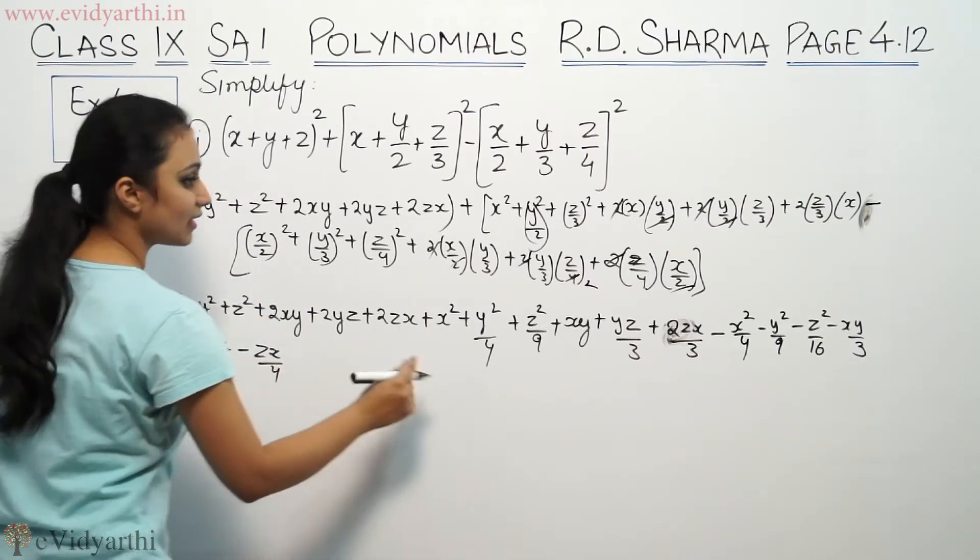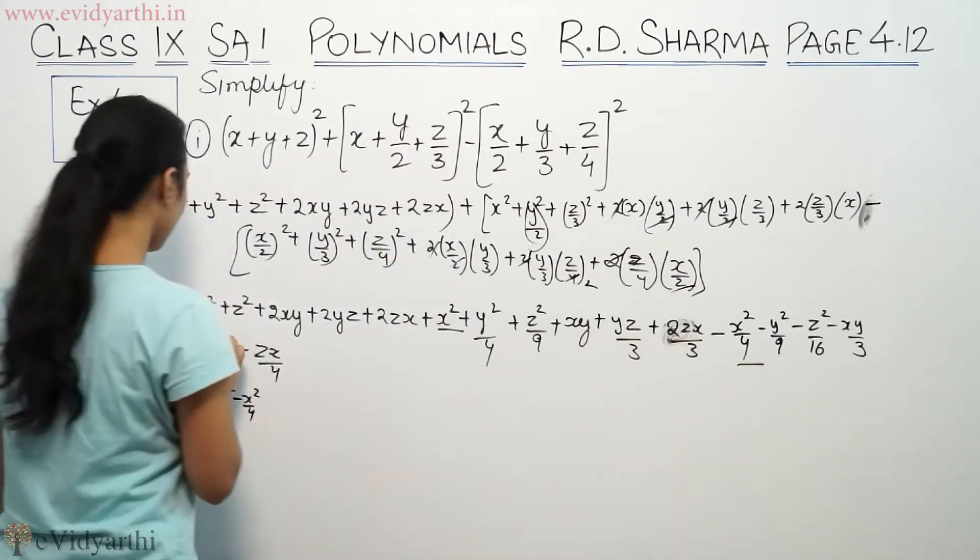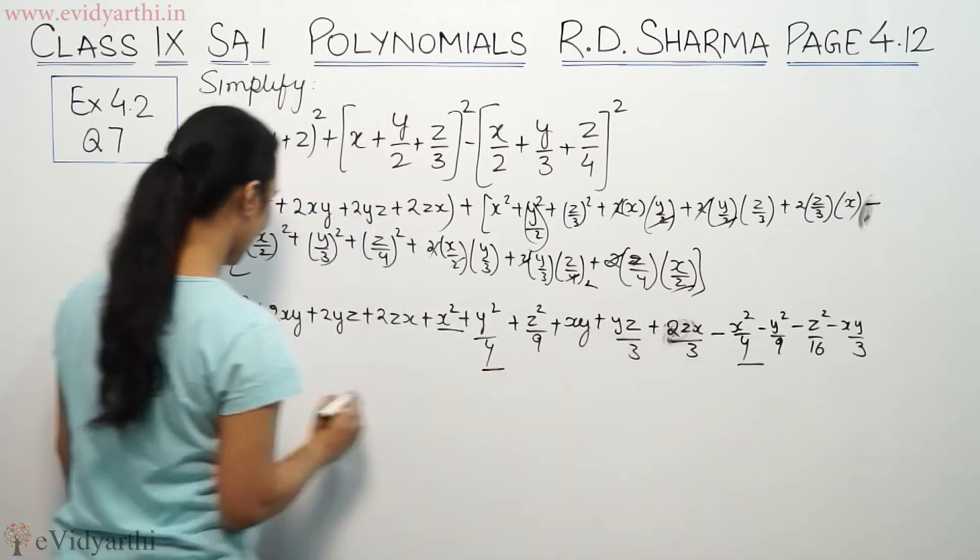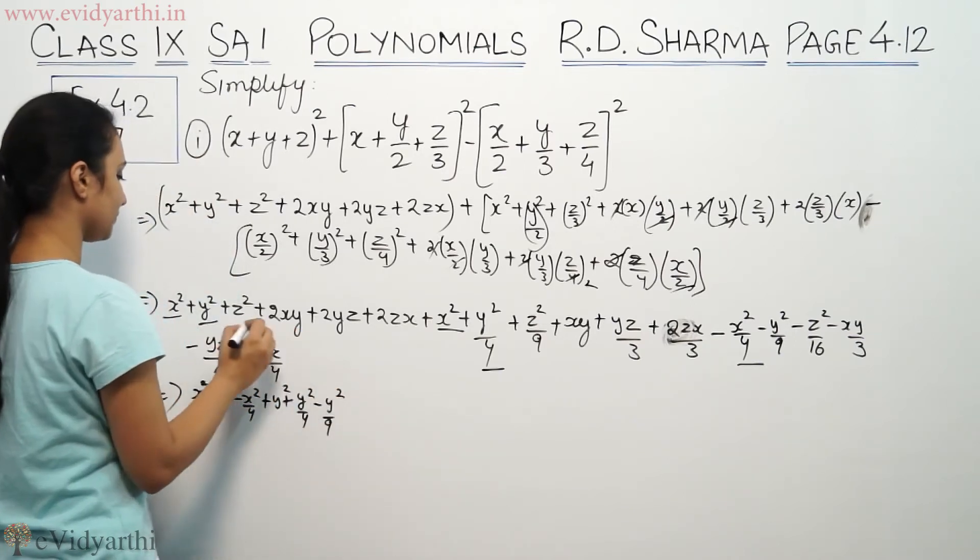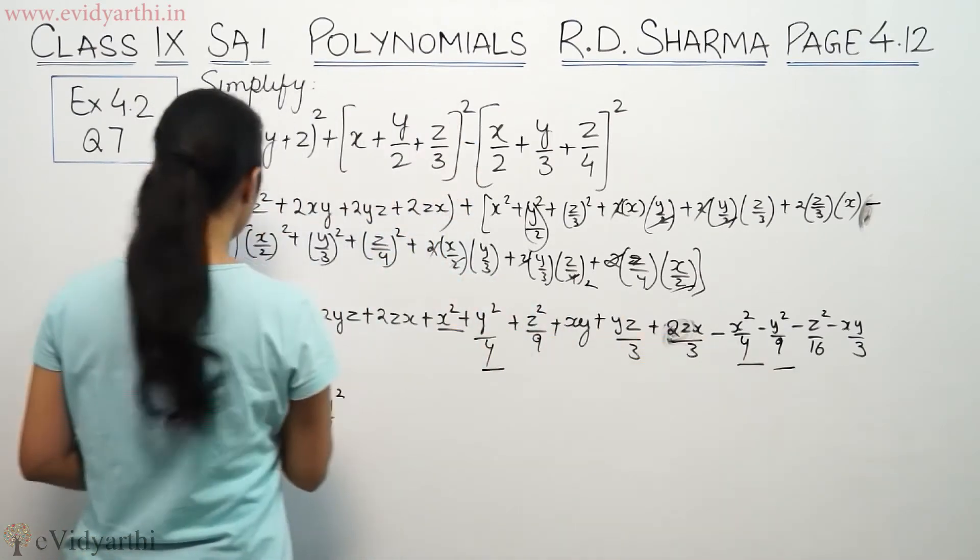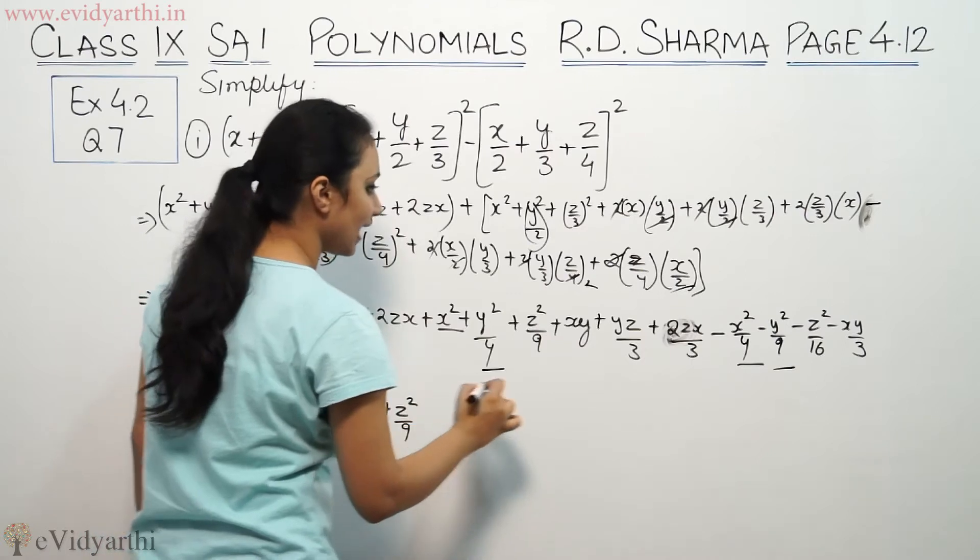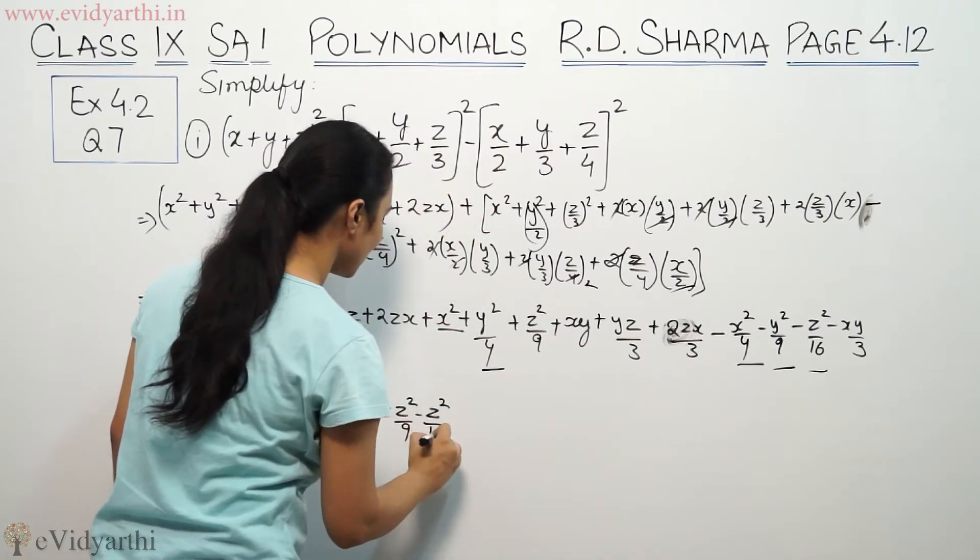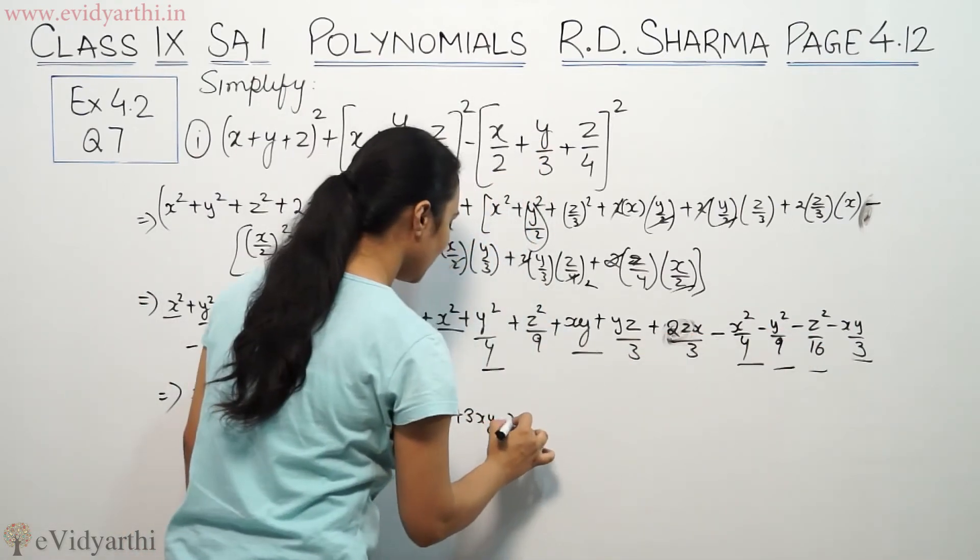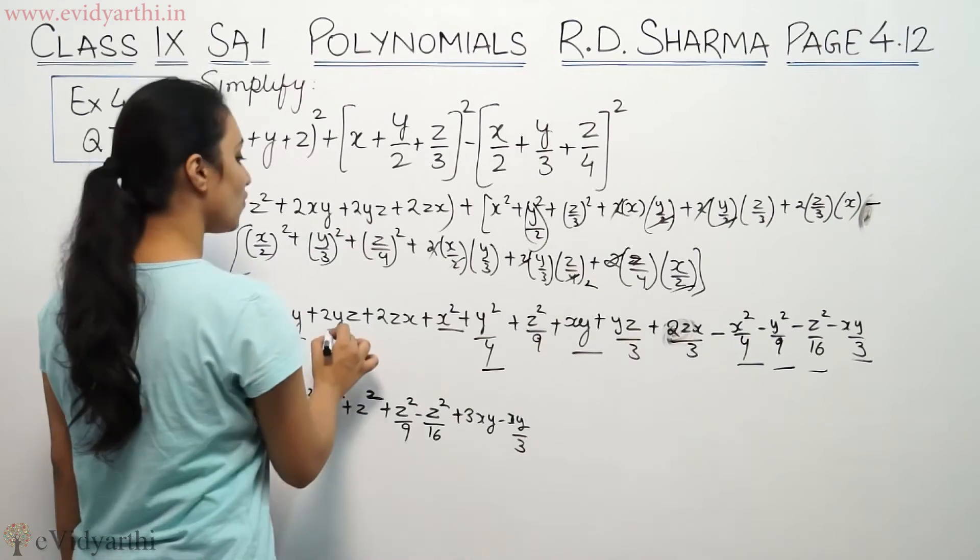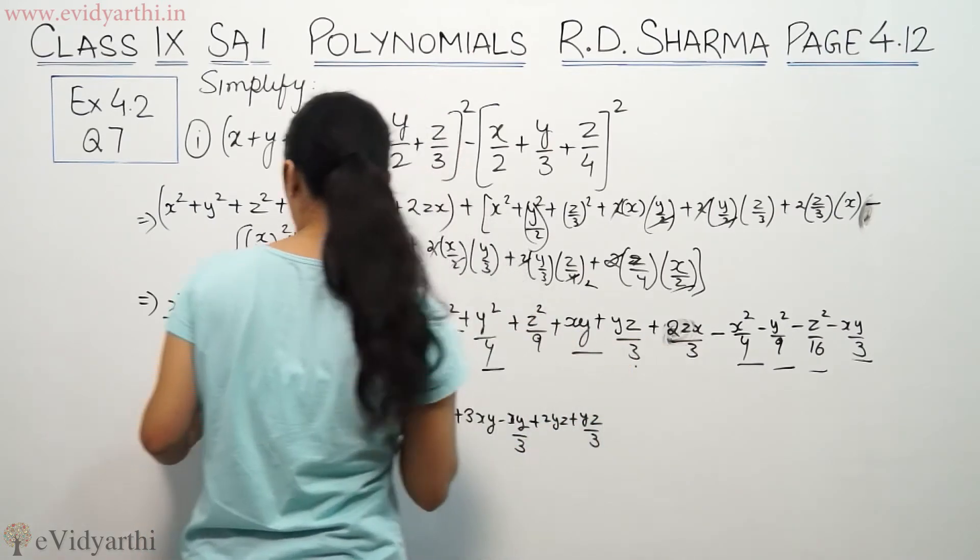For y² terms: y², y²/4, and -y²/9. For z² terms: z², z²/9, and -z²/16. For xy: 2xy+xy-xy/3=3xy-xy/3. For yz: 2yz+yz/3-yz/6.